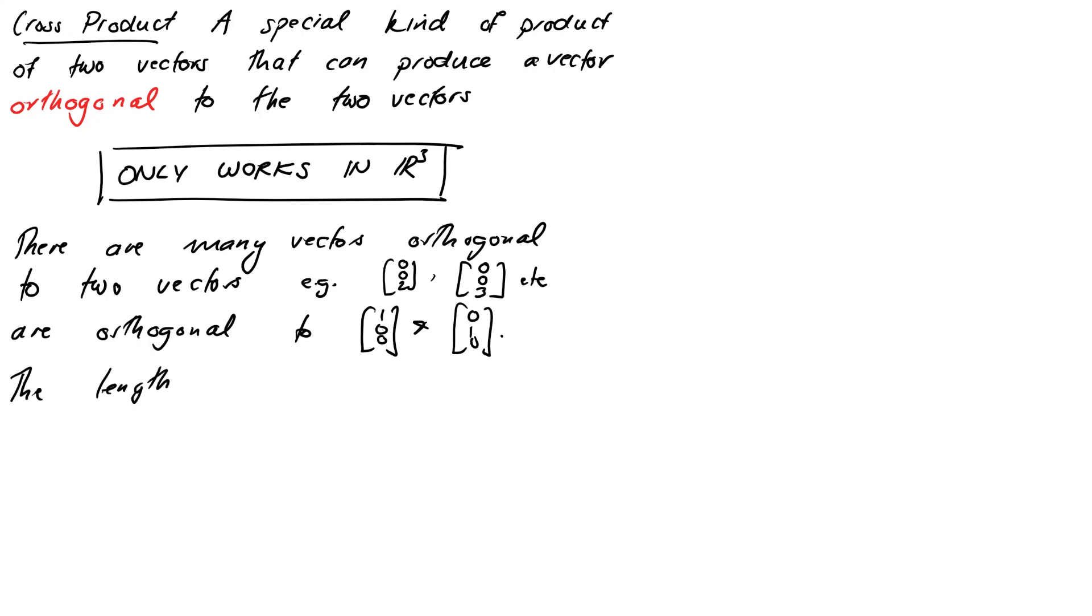So it turns out there's extra information we can put in here. The cross product actually has meaning in terms of how long it is and which direction it points, as well as just being a thing that's orthogonal to the two vectors. So we'll start off with a definition, a very good place to start, and then we can work from there.